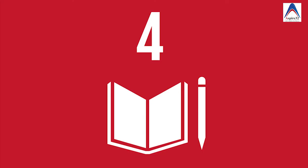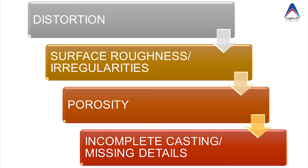The dental casting defects are classified into four categories. One is distortion. Second is surface roughness or irregularities formed on the cast restoration. Third is porosity, which students really find very difficult to understand. And then there is incomplete casting or missing details.